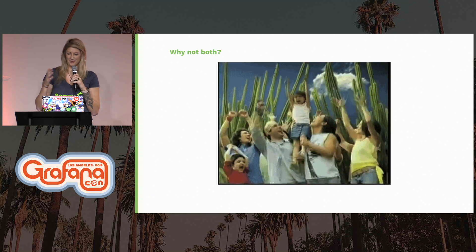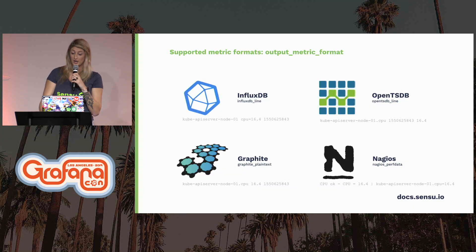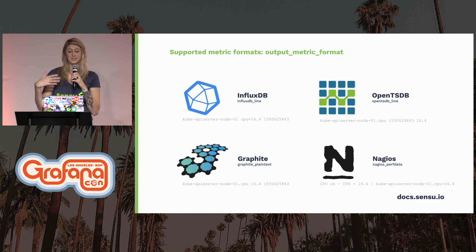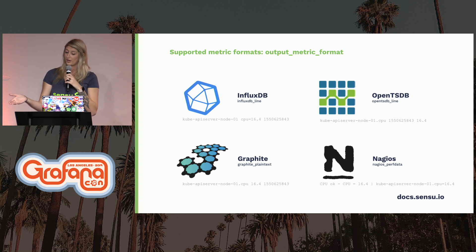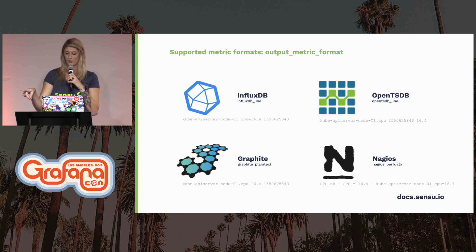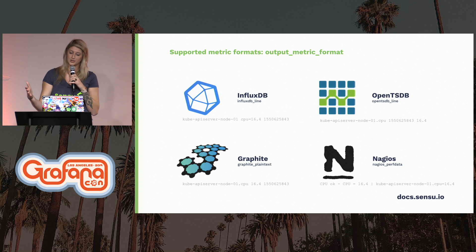Why not both between APM and infrastructure monitoring? Spoiler alert: the more complex your stack gets, you'll probably want both. For output metric extraction, Sensu currently supports four different formats: InfluxDB line protocol, OpenTSDB, Graphite, and Nagios performance data. The key shown below each type — for example, InfluxDB line, Graphite plaintext — is the identifier you would use to define in a given Sensu check configuration. This determines which format in the check output should be parsed and mapped to the field output metric format. There's also a simple metric example below each of these formats. For all of the formats that actually do support metric tagging, so does Sensu.